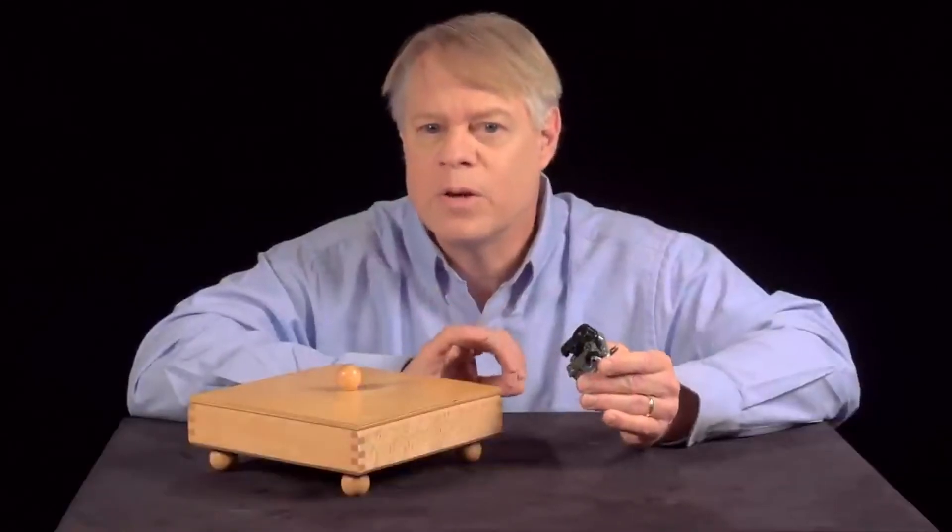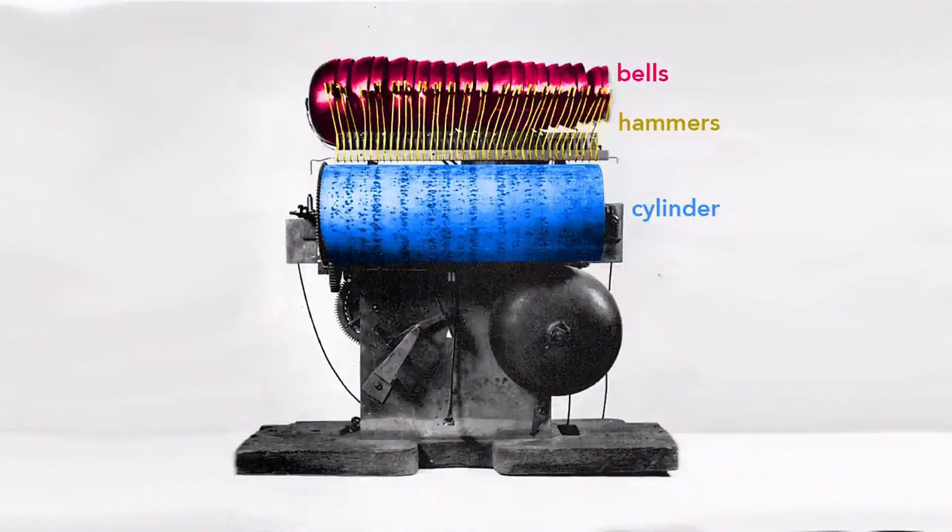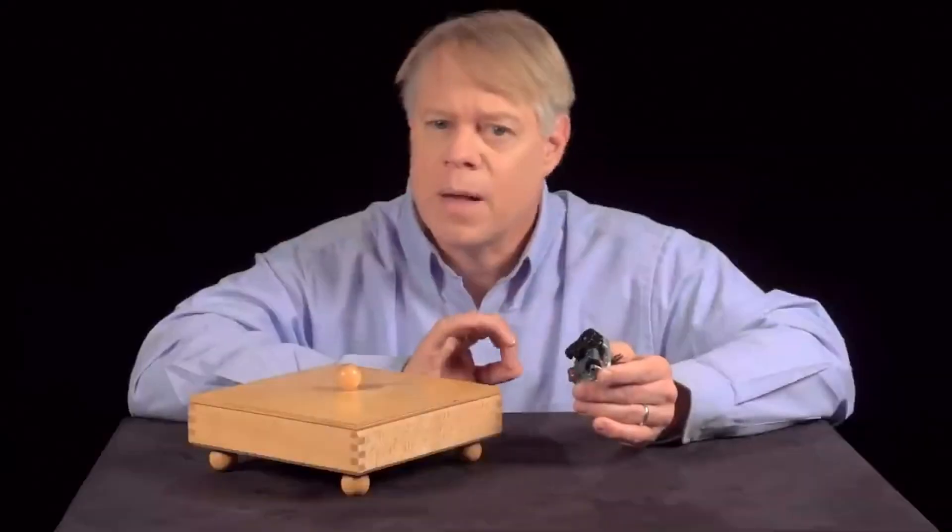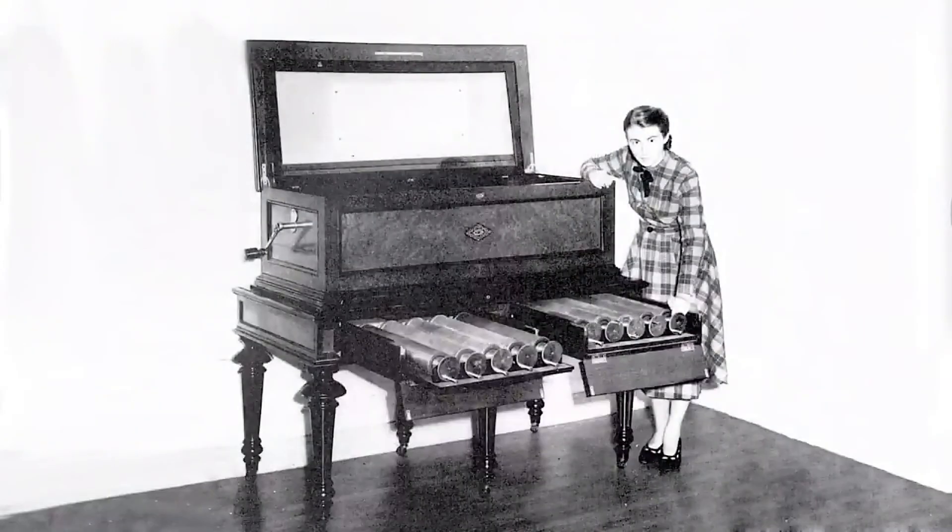As I noted, this music box evolved from devices that used bells struck by hammers. The replacement of these bells with a comb was the technical breakthrough that catalyzed a music box industry that blossomed in the 19th century. The compact comb movements were built into snuff boxes, clocks, and large pieces of furniture.